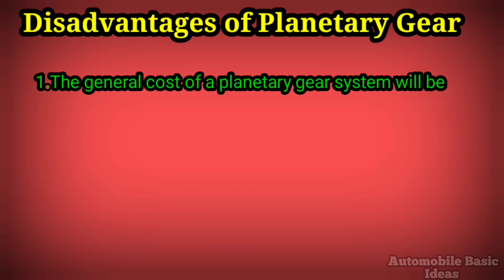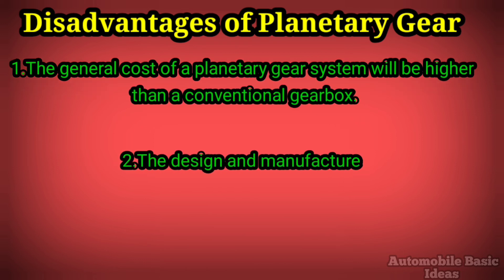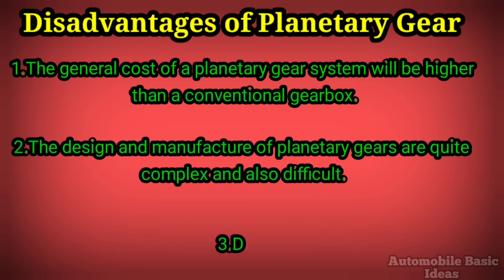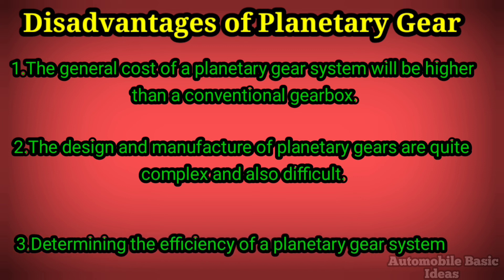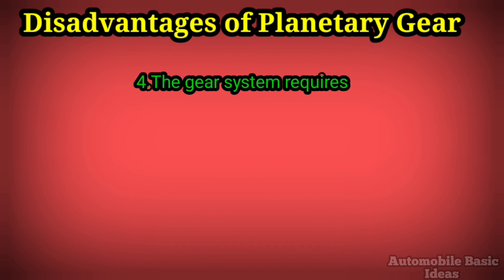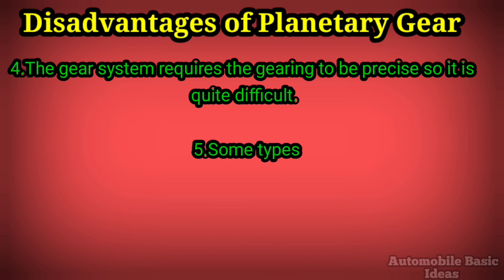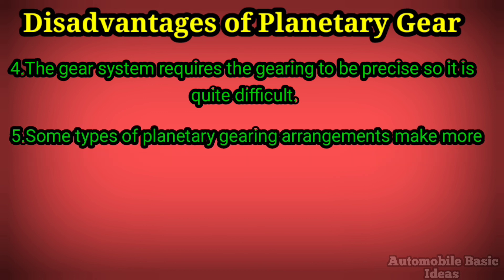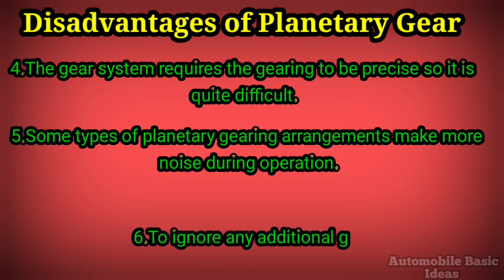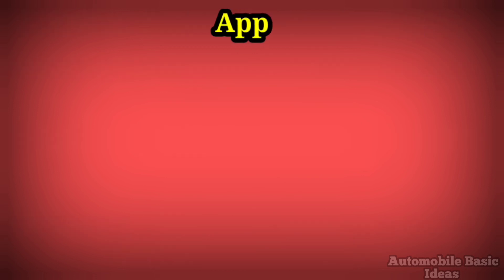Disadvantages of planetary gear. One: the general cost of a planetary gear system will be higher than a conventional gearbox. Two: the design and manufacture of planetary gears are quite complex and difficult. Three: determining the efficiency of a planetary gear system would be challenging. Four: the gear system requires precise gearing, making it quite difficult. Five: some types of planetary gearing arrangements make more noise during operation. Six: to avoid any additional gearing, the driving member and the driven member must converge.